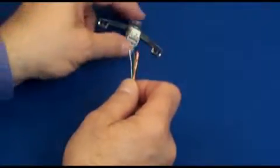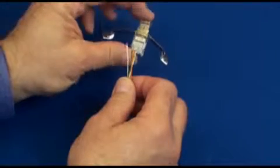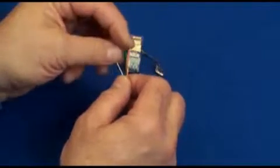You want to arrange your conductors in the order of the color-coding. In this case, orange stripe, orange solid, green stripe, green solid. So we'll do that.